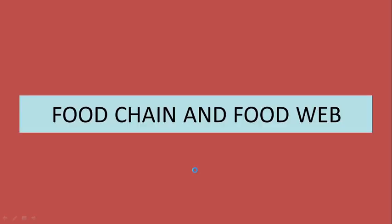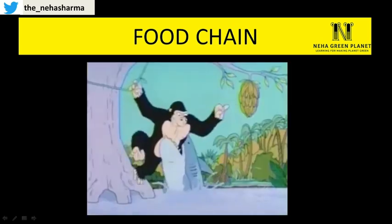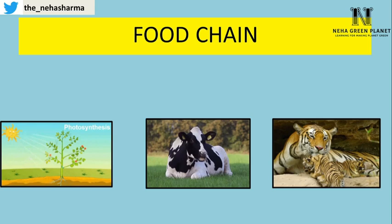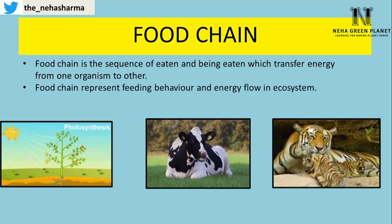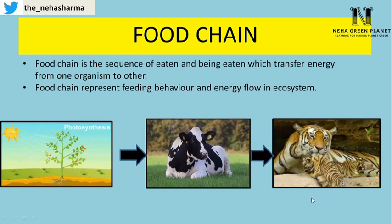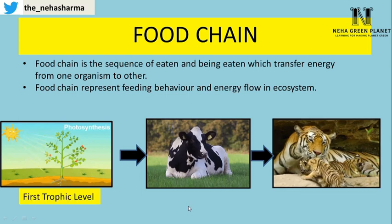Food chain and food web represent the sequence in which one organism feeds on another. A food chain is the sequence of eating and being eaten, which transfers energy from one organism to another. Food chain represents feeding behavior and energy flow in an ecosystem. By looking at any food chain, we can easily make out whether an organism is a producer, herbivore, or carnivore. From the producer, energy is transferred into herbivores and from herbivores into carnivores. We call each level a trophic level.